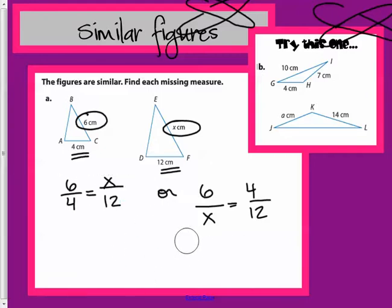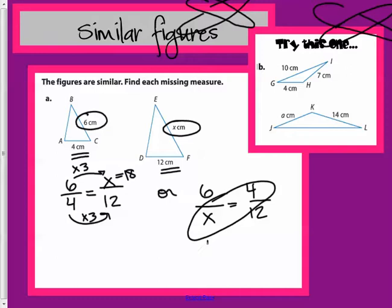Okay, so if we solve here, how do I get from four to twelve? Multiply by three. So multiply this one by three and get eighteen. Or, in this case, it's not really easy to get from six to four, so we can use cross products.